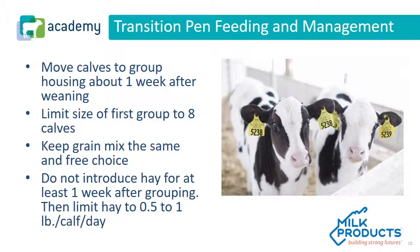Transition pen feeding and management considerations: calves should be moved to group housing from individual housing about one week after weaning. The ideal is to leave the calf in the hutch for one week after weaning and feed it starter and water. One should increase the group size gradually, starting with groups of eight calves. In the group pens, the calf should be kept on the same starter feed, fed free choice, as well as free-choice water. Hay should not be introduced for at least one week after grouping and then should be limit-fed to a half to one pound per calf per day.